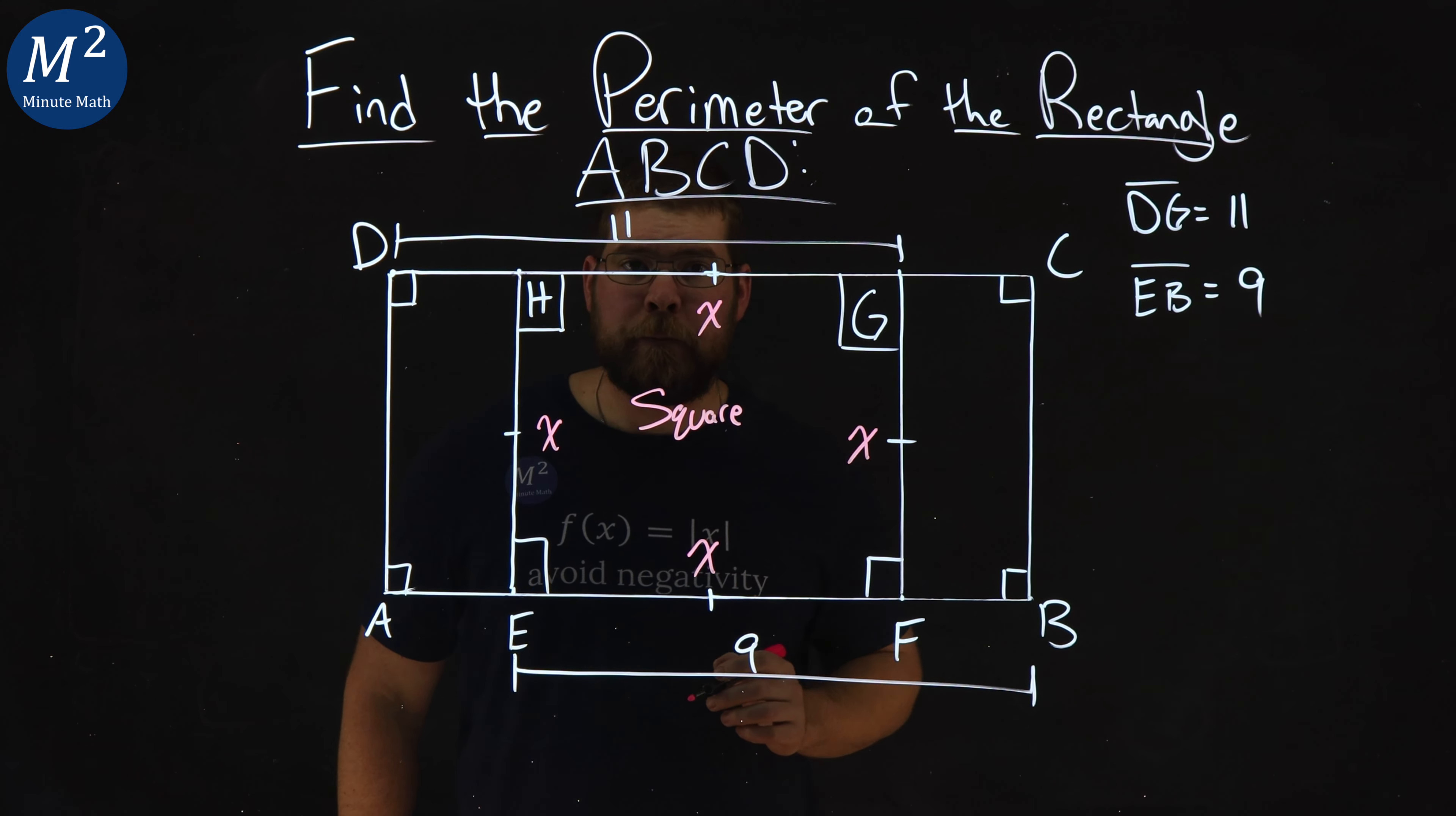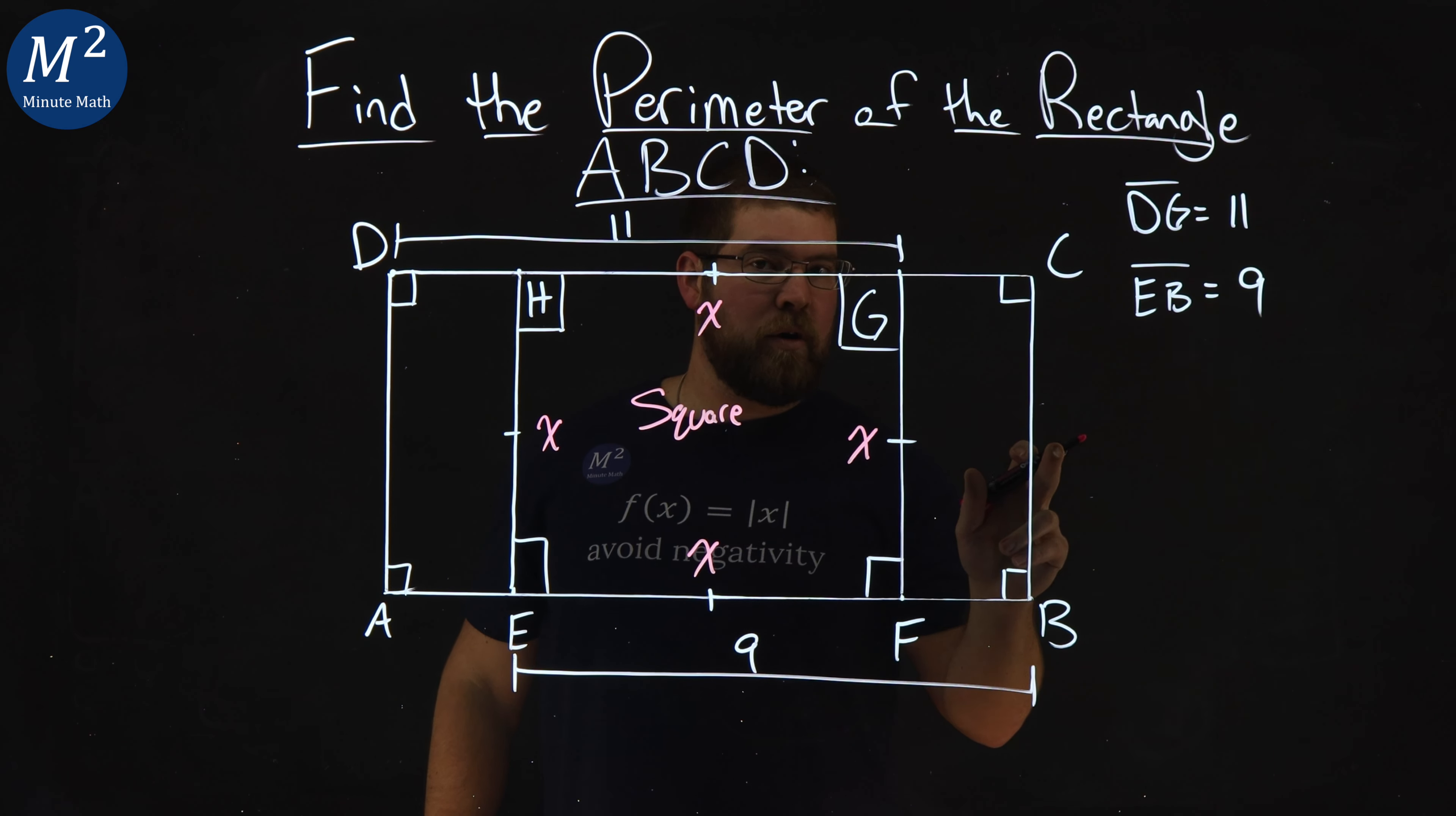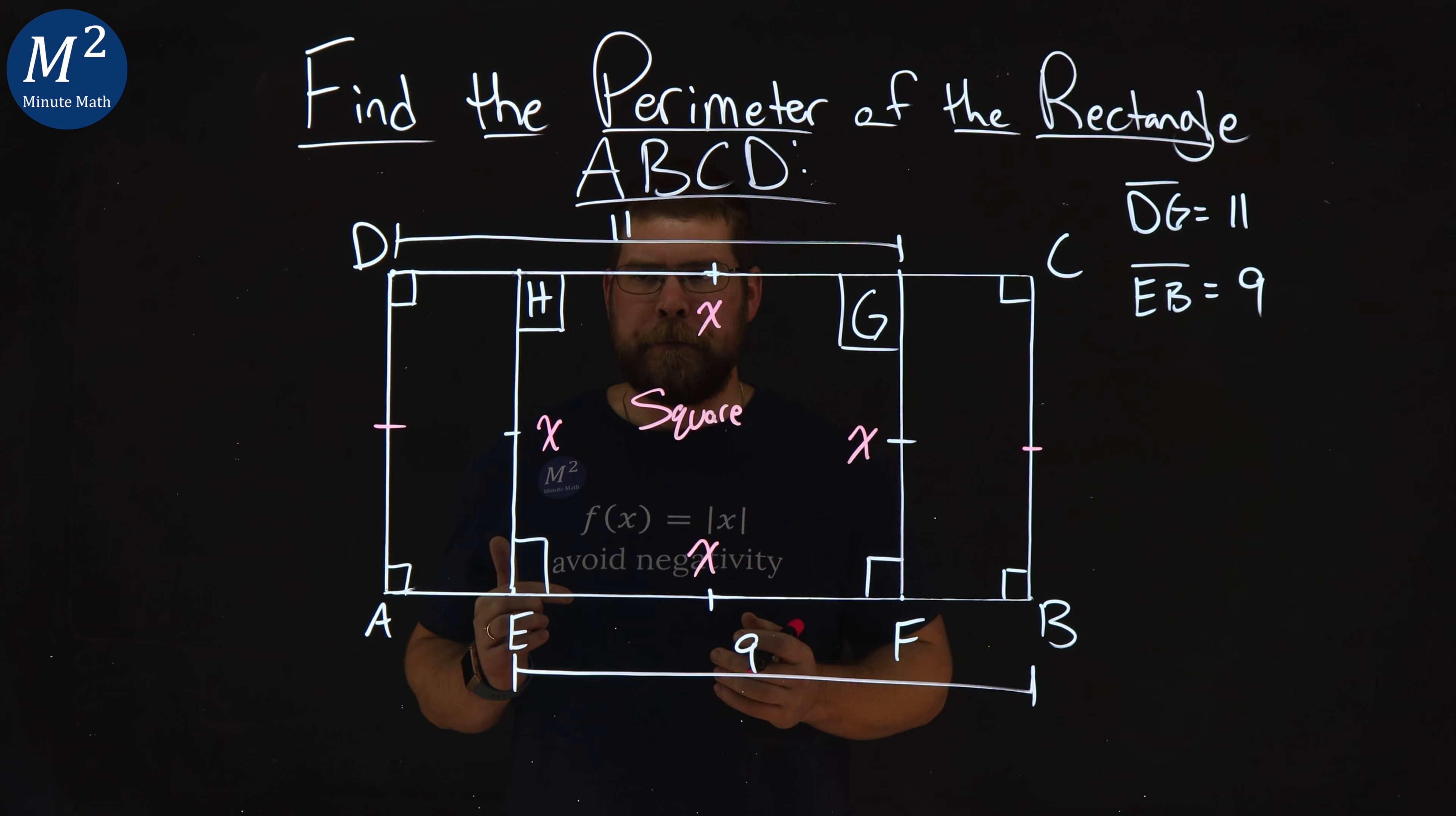We also know, since this is a rectangle ABCD, and inside this square, that these same lengths are, well, the same. BC here, and AD there. All right, so we got some more extra information here.